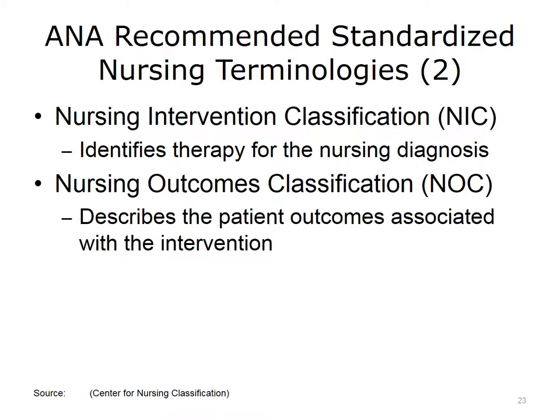The Nursing Intervention Classification, or NIC, is used to identify what the nurse did for the patient to relieve or prevent current or potential problems. NIC contains 433 interventions. The Nursing Outcomes Classification, or NOC, is a terminology used for the evaluation of the outcome of the nursing interventions. Included with each outcome are the definition and indicators for assessing the effectiveness of the intervention.